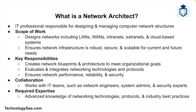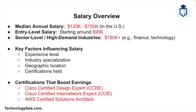The average salary of a network architect varies depending on factors such as experience, industry, location, and certifications. In the United States, the median annual salary is approximately $120,000 to $150,000. Entry-level positions may start around $90,000, while experienced professionals in high-demand industries such as financial technology can earn upwards of $180,000 or more. Obtaining certifications like Cisco Certified Design Expert, Cisco Certified Internetwork Expert, or AWS Certified Solutions Architect can significantly boost earning potential.